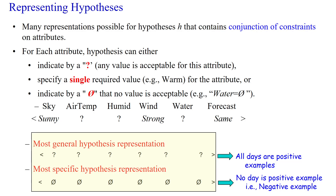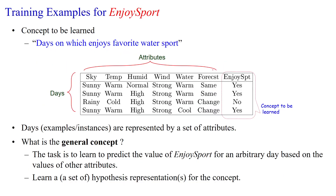Hi everyone. How to represent the hypothesis in concept learning? Here many representations are possible for hypothesis H that contains conjunction of the constraints of all attributes. For example, this dataset is having six attributes.